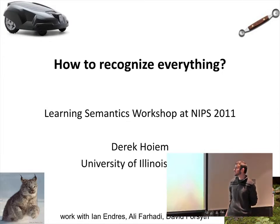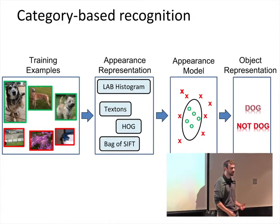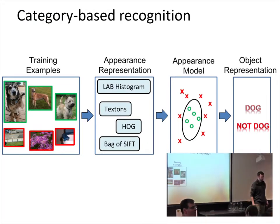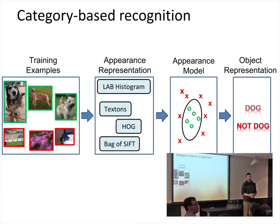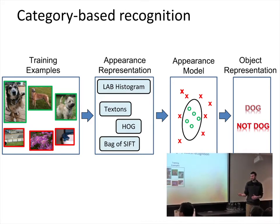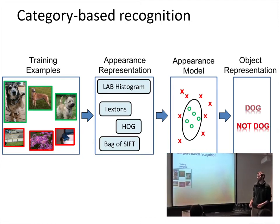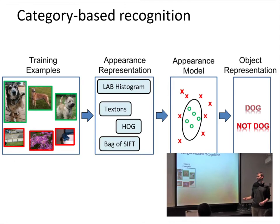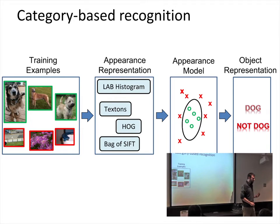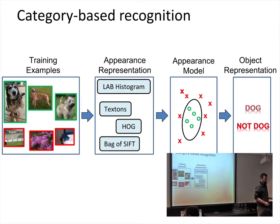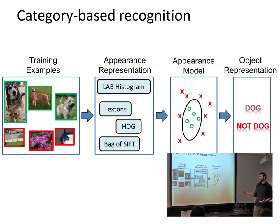I'm going to start by talking about recognition as it's usually defined within computer vision. Usually when we think about recognition we think about assigning some image to some object category. So for example if we wanted to build a dog detector, the way that we would do it is we would gather a set of training examples — a set of examples of dogs and a set of examples of things that are not dogs. We choose some visual features and then train a classifier that can differentiate between the dog examples and the not-dog examples based on that visual representation.